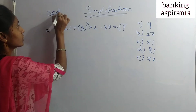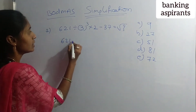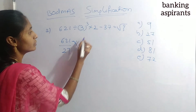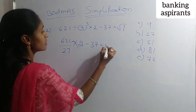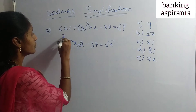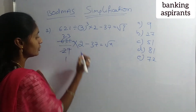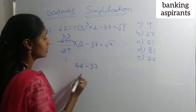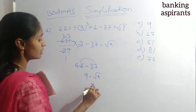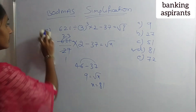We know the BODMAS rule; we should always follow BODMAS for simplification. So: 3 cubed equals 27. 621 divided by 27 into 2 minus 37 equals root x. 621 ÷ 27 is 23. 23 into 2 is 46. 46 minus 37 is 9. So root x equals 9, meaning x equals 81. The answer is D) 81.